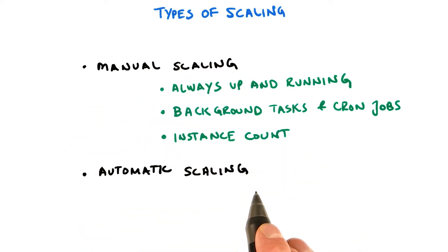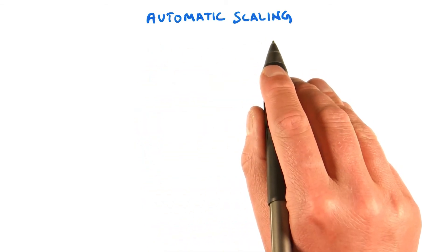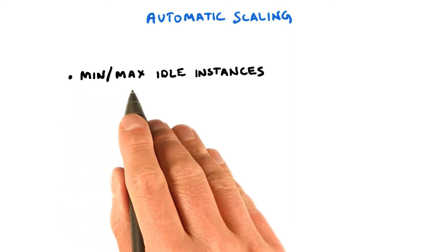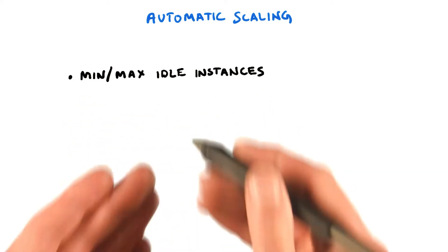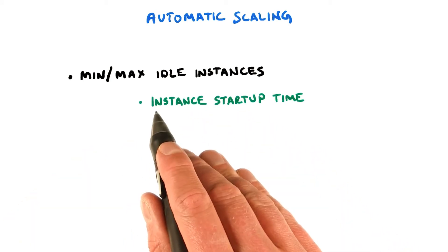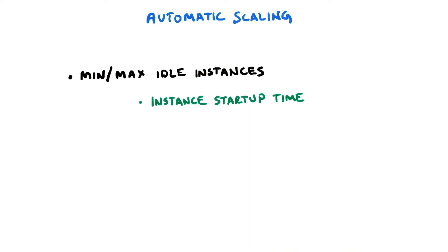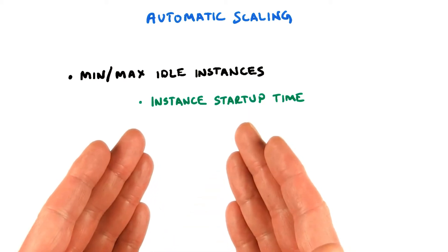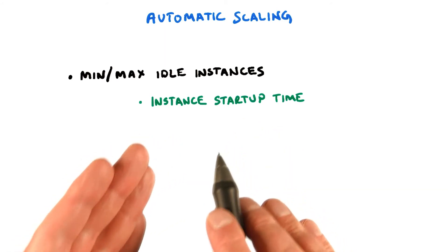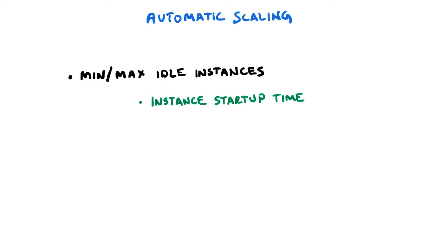Let's now talk about automatic scaling. Automatic scaling is the option that allows App Engine to automatically scale your application up and down depending on the load. The first two options you can specify for automatic scaling is the minimum and maximum number of idle instances you want. What does this mean? Why would you want to have idle instances? Well, instances have a startup time. And if you don't want your users to wait for the response while your application needs to scale up by starting new instances, it could be good to have idle instances available if your application needs to scale up so your users don't have to wait for more instances to start.